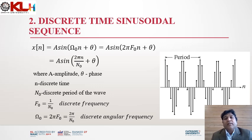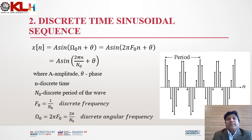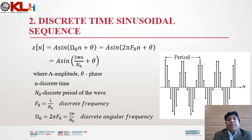Now we are going to discuss the second topic, which is discrete time sinusoidal sequence. The discrete time sinusoidal sequence is given by x[n] = A sin(ω₀n + θ). Here n is the discrete time and ω₀ is the discrete angular frequency. We can write ω₀ = 2πf₀, where f₀ is the discrete frequency. The time period is the number of samples, N₀, and f₀ = 1/N₀. You can see the shape of a discrete sinusoid signal in the graph.